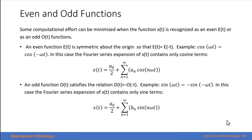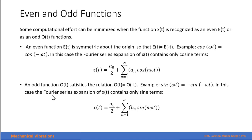Computational effort can be minimized when a function is recognized as even or odd. An even function is symmetric about the origin such that f(t) equals f(-t); for example, the cosine is an even function, and its Fourier series contains only cosine terms. An odd function satisfies f(t) equals -f(-t); for example, the sine is an odd function, and its Fourier series expansion contains only sine terms.